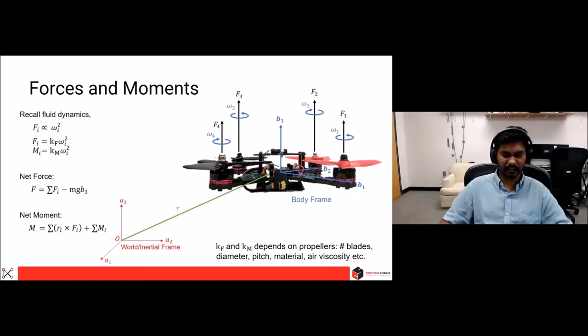So Kf and Km are basically constants which depend upon the propellers, the number of blades, the diameter, pitch, material, air viscosity, and so on.